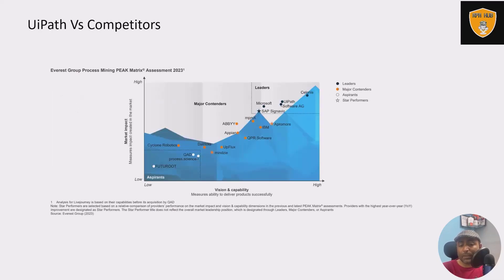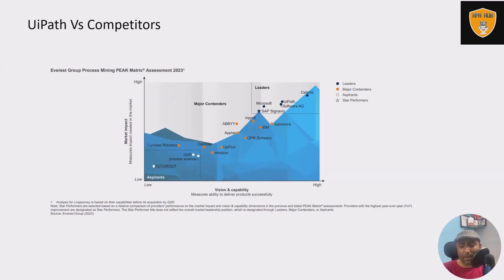UiPath versus competitors — this chart is from the Gartner Report. Here you can see UiPath is one of the leaders in the Process Mining space. If you look at Microsoft, Software AG, SAP, Signavio, Apromore, and IBM — all are behind UiPath. Just one product is leading ahead of it, with UiPath in second place. That's one of the reasons I wanted to create this video.